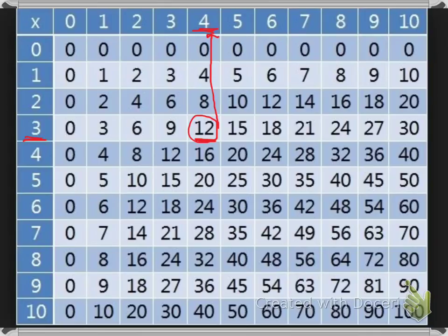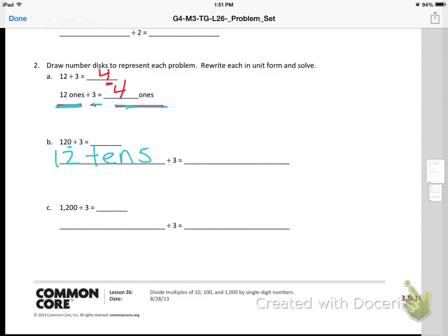If I was going to use my chart, which I can, I can still see that in the 3 column, 12 is the answer. When I go up, I see a 4. So just like 12 ones divided by 3 is 4, 12 tens divided by 3 is also 4, but not 4 ones, 4 tens.